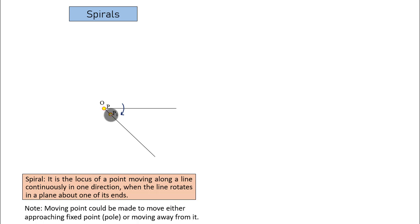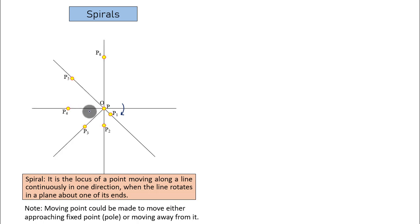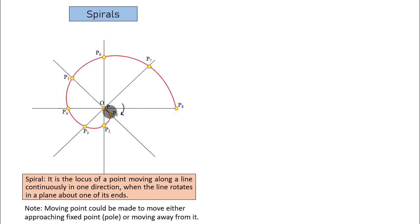When the link rotates by 45 degrees, point P achieves a new location P1. If the link rotates further by another 45 degrees, the point moves further away from the pole. The link keeps rotating, the point keeps moving further and further away until it reaches the other end of the link. When you join all these points from the start till the end in proper sequence with a smooth curve, this is what you call a spiral — this red color curve is referred to as a spiral.